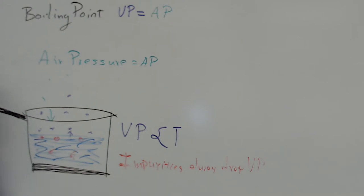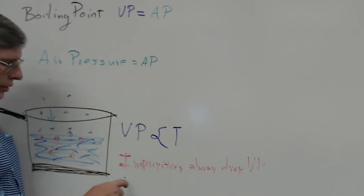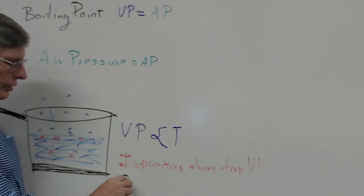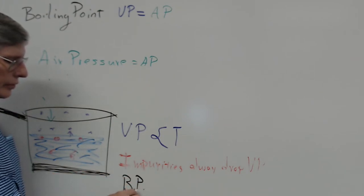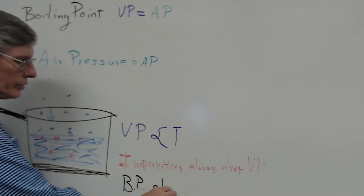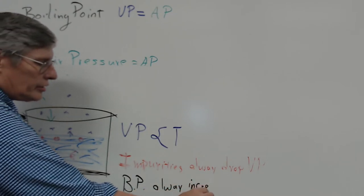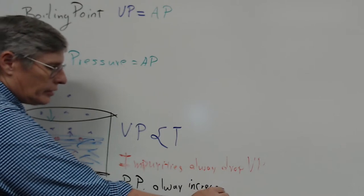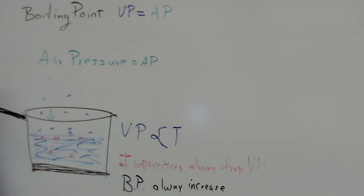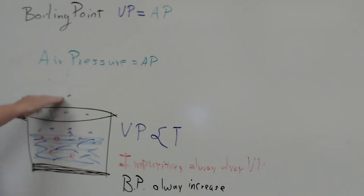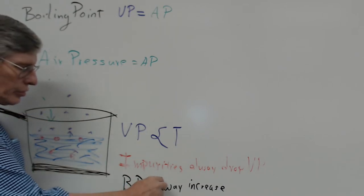What happens is the boiling point — and this is another law — whenever impurities are added, the boiling point of a liquid always increases. The liquid has to reach a higher temperature before it can reach the pressure of the air pressure and boil against it. That's an absolute truth.